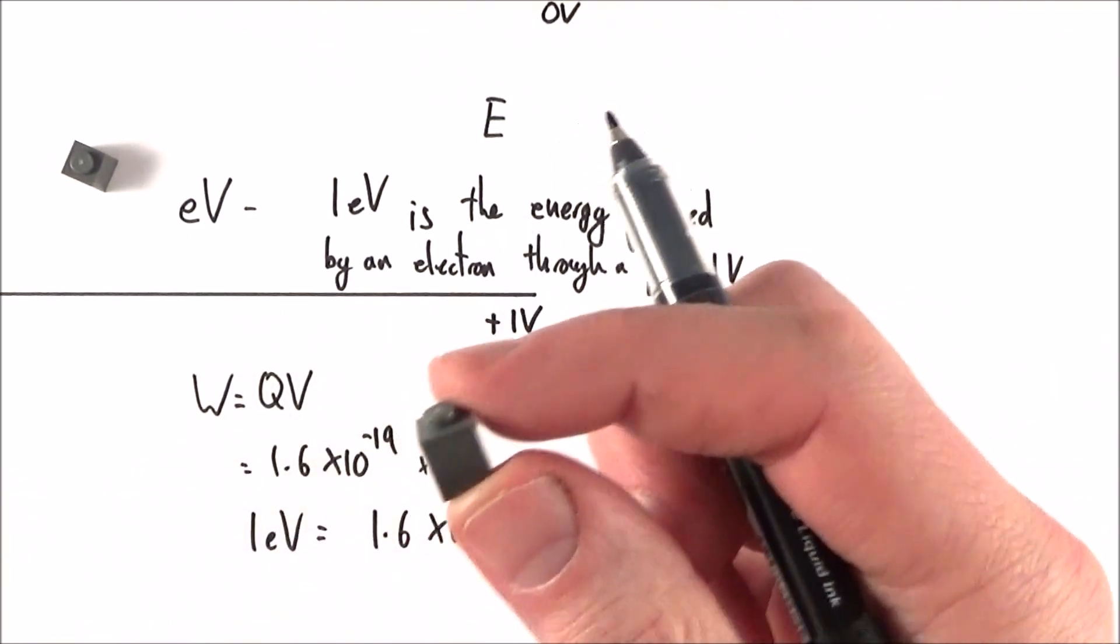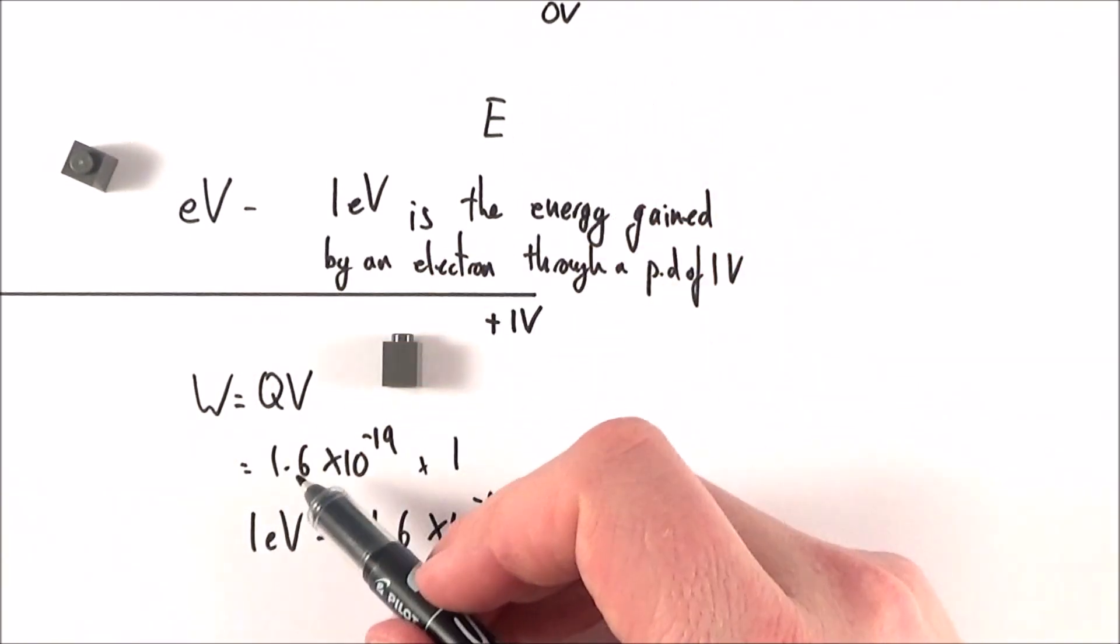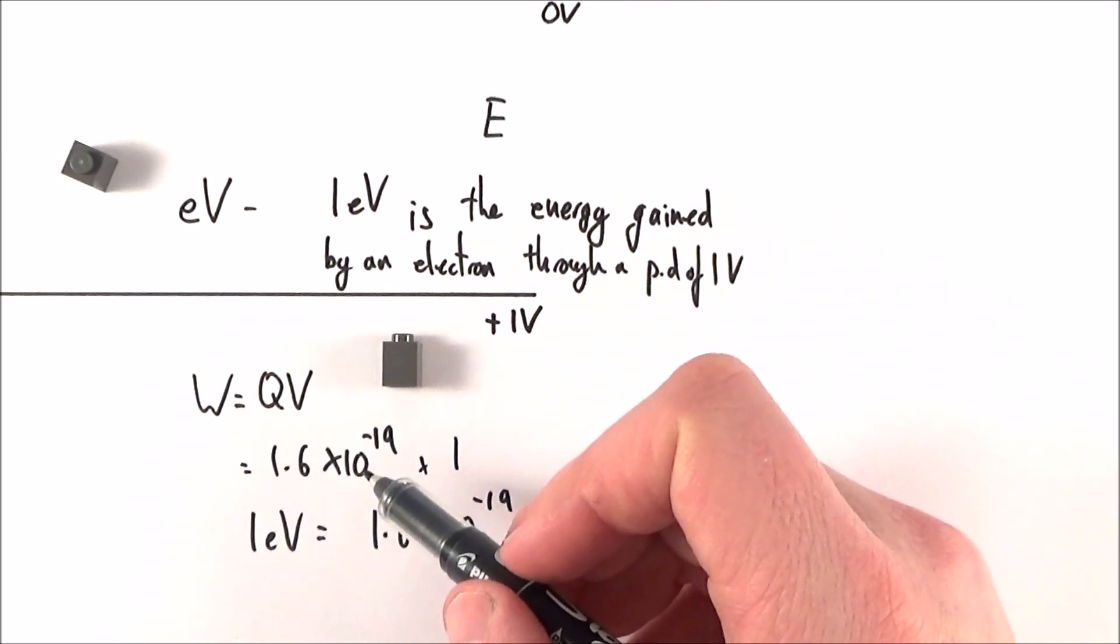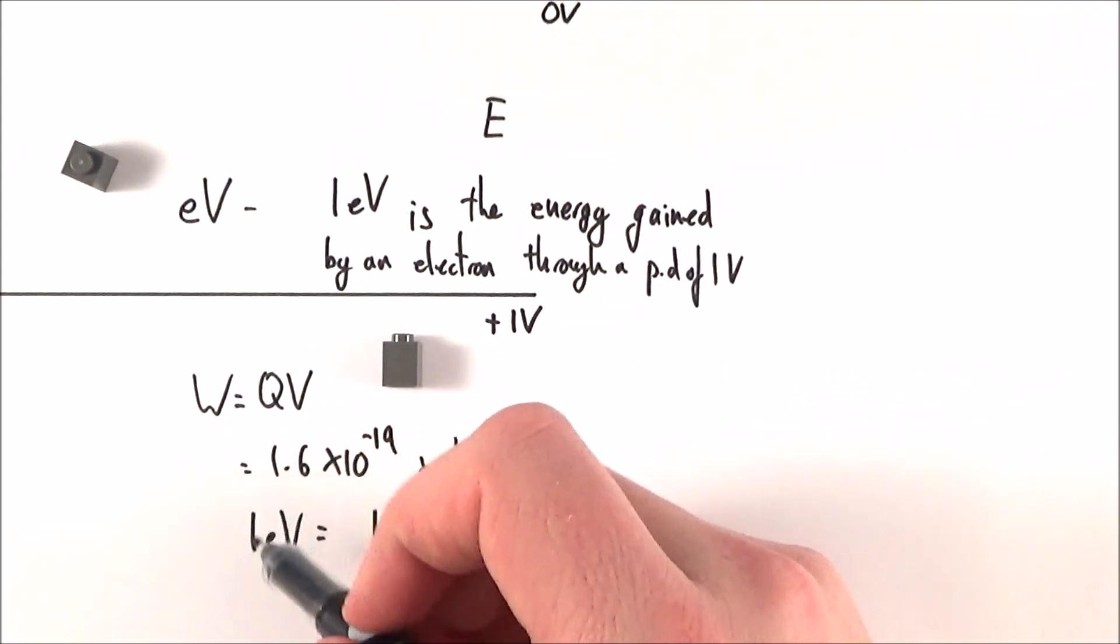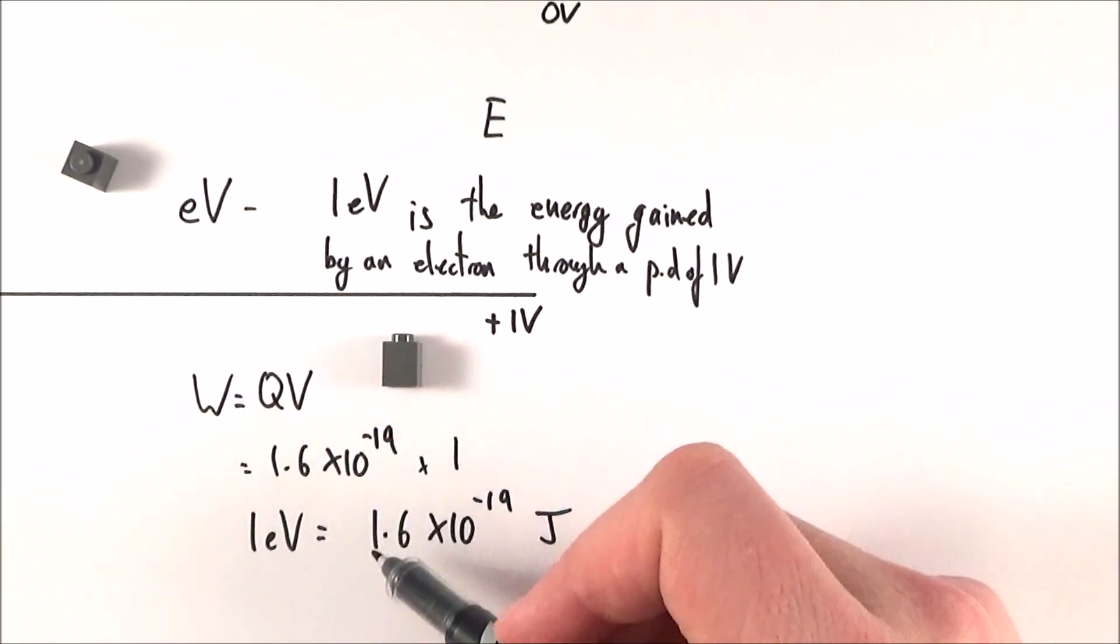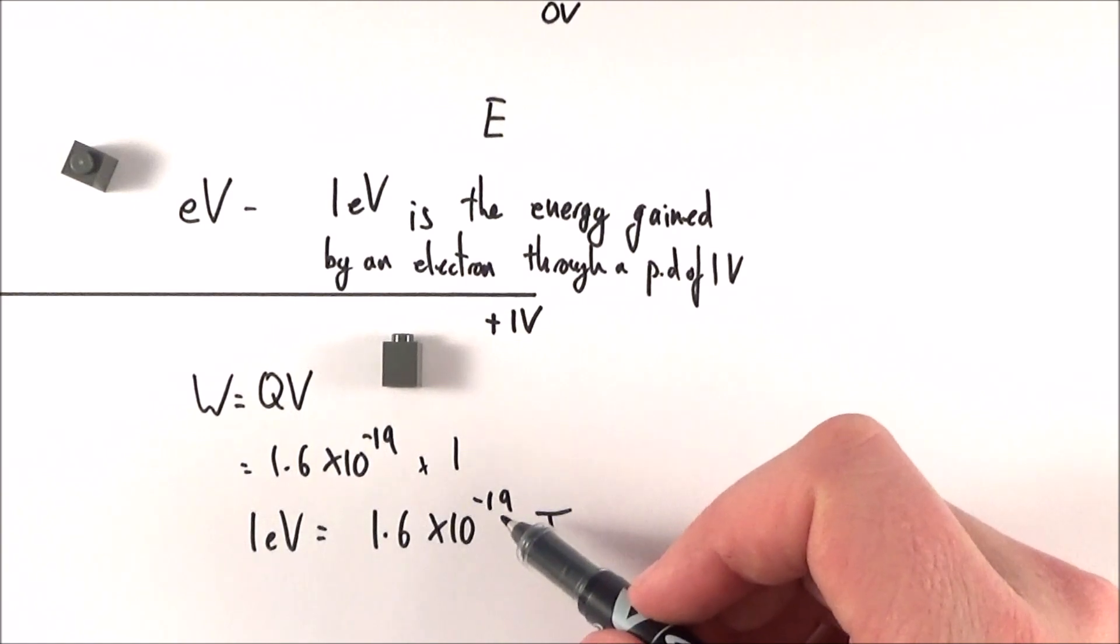Now, the elementary charge on one of these electrons is equal to 1.6 times 10 to the minus 19 coulombs, so a very small amount. And we multiply that by the potential difference of one volt. So we find that one electron volt of energy is equal to 1.6 times 10 to the minus 19 joules.